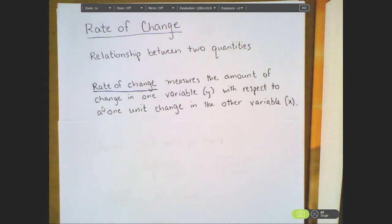My formal definition: the rate of change measures the amount of change in one variable, typically denoted by Y, with respect to a one unit change in the other variable, typically given by X.